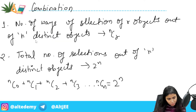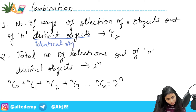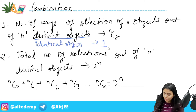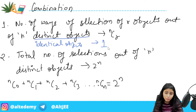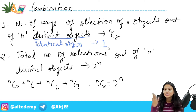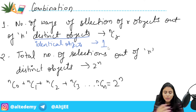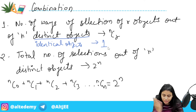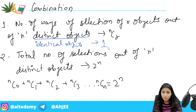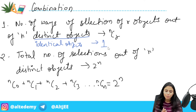We talked about distinct objects. What about identical objects? The number of ways of selection from identical objects is always equal to one. Whenever you have, say, five identical red balls, whatever you choose is always equivalent — it doesn't matter which ones you pick. So the number of ways is only one. Sometimes students just apply nCr for identical objects and lose their plus four marks. Remember: whenever the word 'identical' is used, the answer is one.